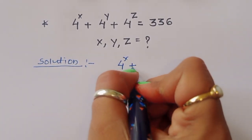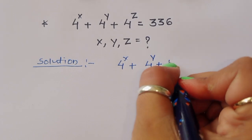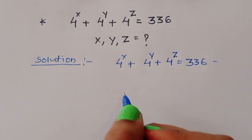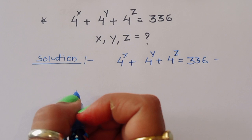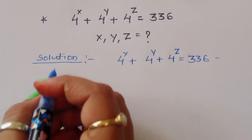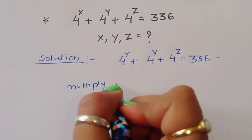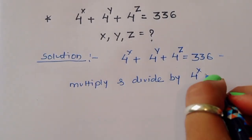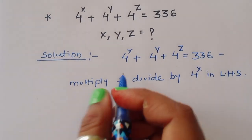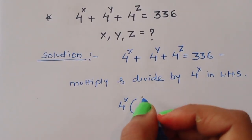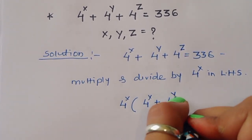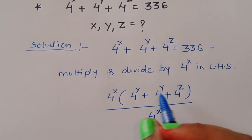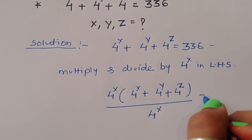4 power x plus 4 power y plus 4 power z is equal to 336. Now we can do one thing here: multiply and divide by 4 power x in the LHS. So 4 power x plus 4 power y plus 4 power z, divided by 4 power x — we are multiplying and dividing, so the value is the same — is equal to 336.